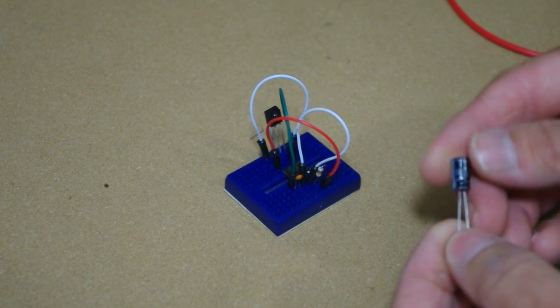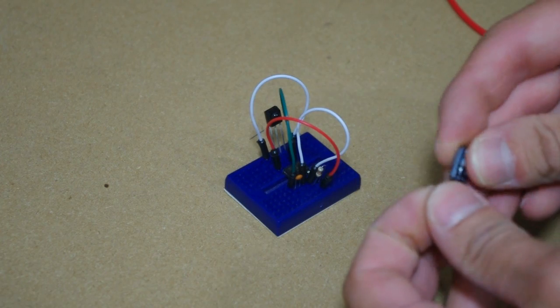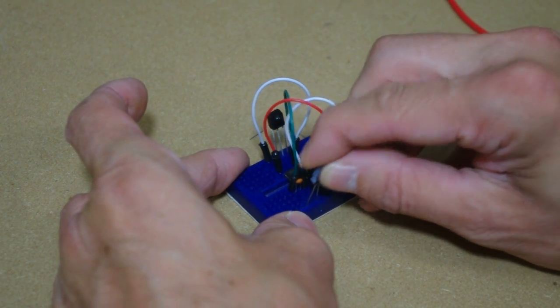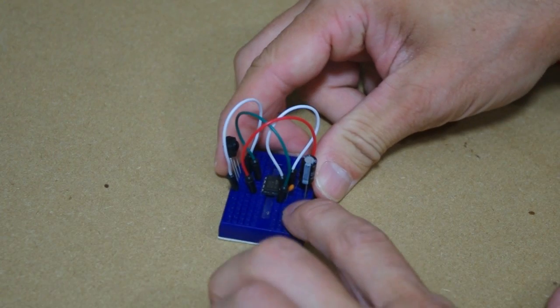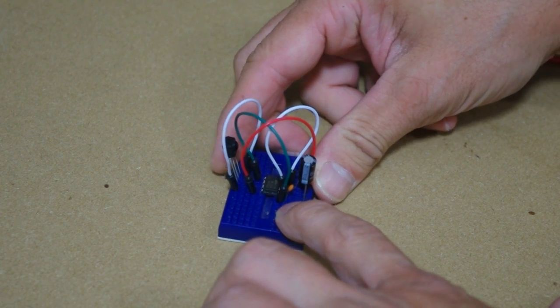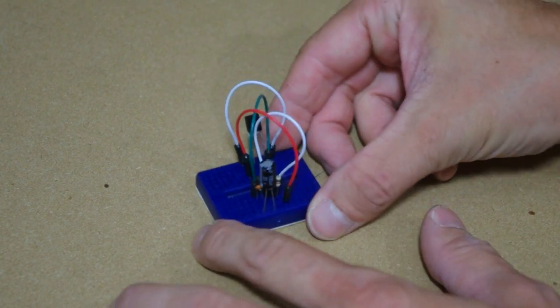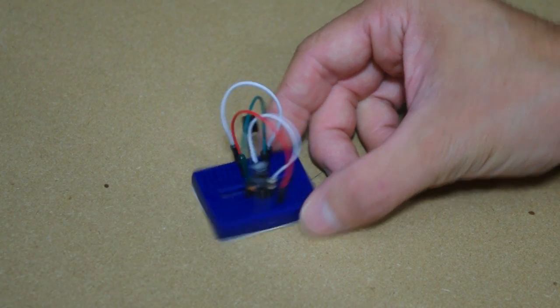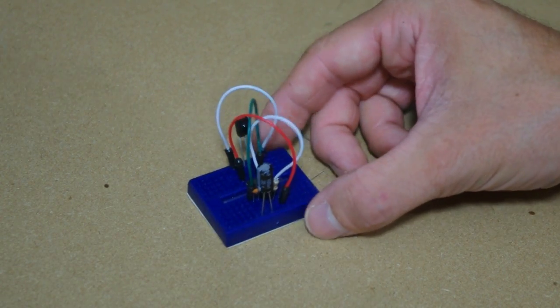And the capacitor will go from pin six, or pin six and seven to ground, and I'm just using the same ground that I used for the bypass capacitor, and there you have it.